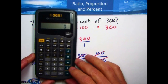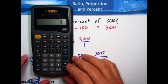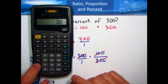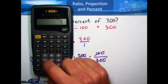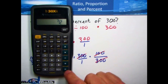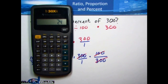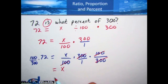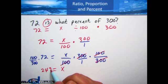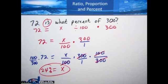Here's our first problem. Using the calculator: 100 over 300 times 72 gives us 24. Remember the question said 'what percent?' — we came up with 24, so the answer is 24%. It's as simple as that.